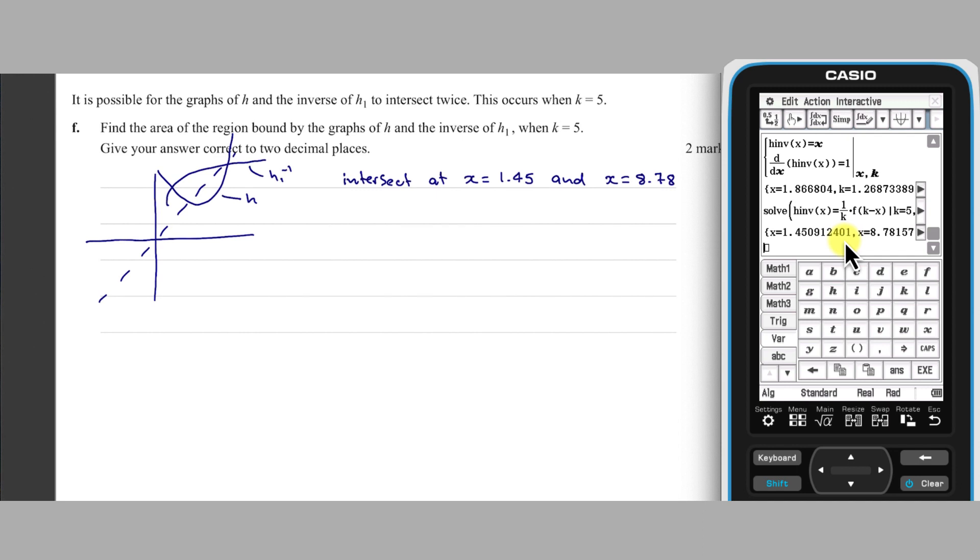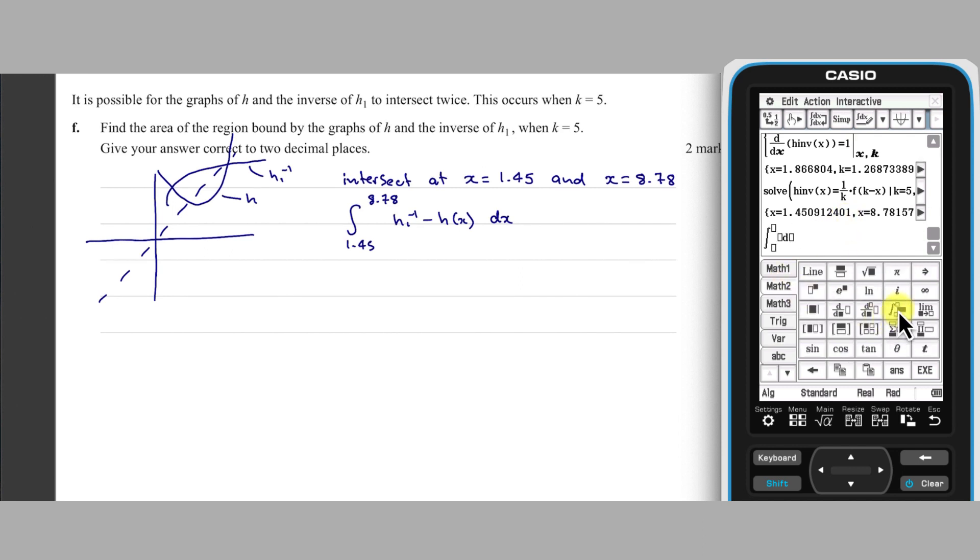Now the area required can be found as an integral from 1.45 to 8.78 of H inverse minus H of X, given that K equals 5. The ClassPad's evaluation of this definite integral to two decimal places is 43.91.